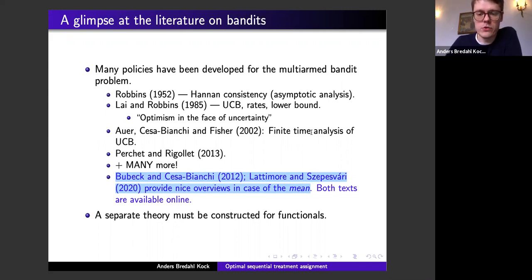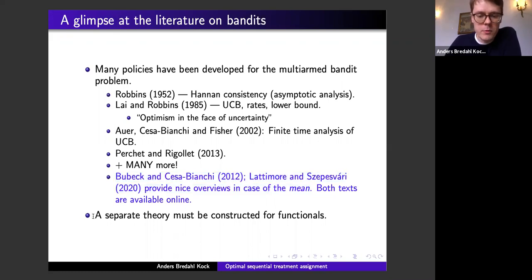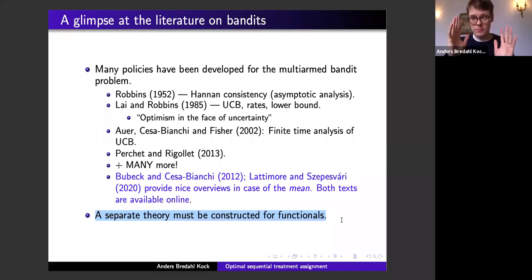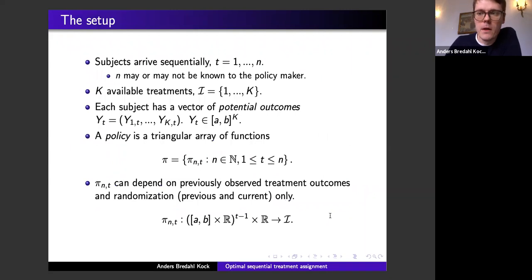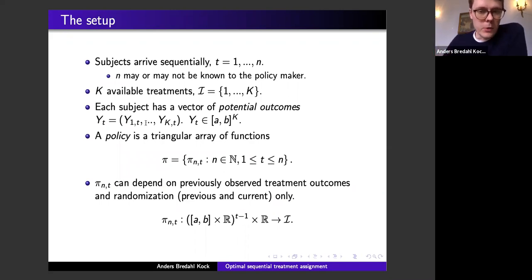Since existing sources focus only on the mean, we must develop a separate theory that covers as many functionals as possible while still allowing us to prove upper bounds on the worst-case performance of the algorithms. That is the target we embark on next, after this introduction.